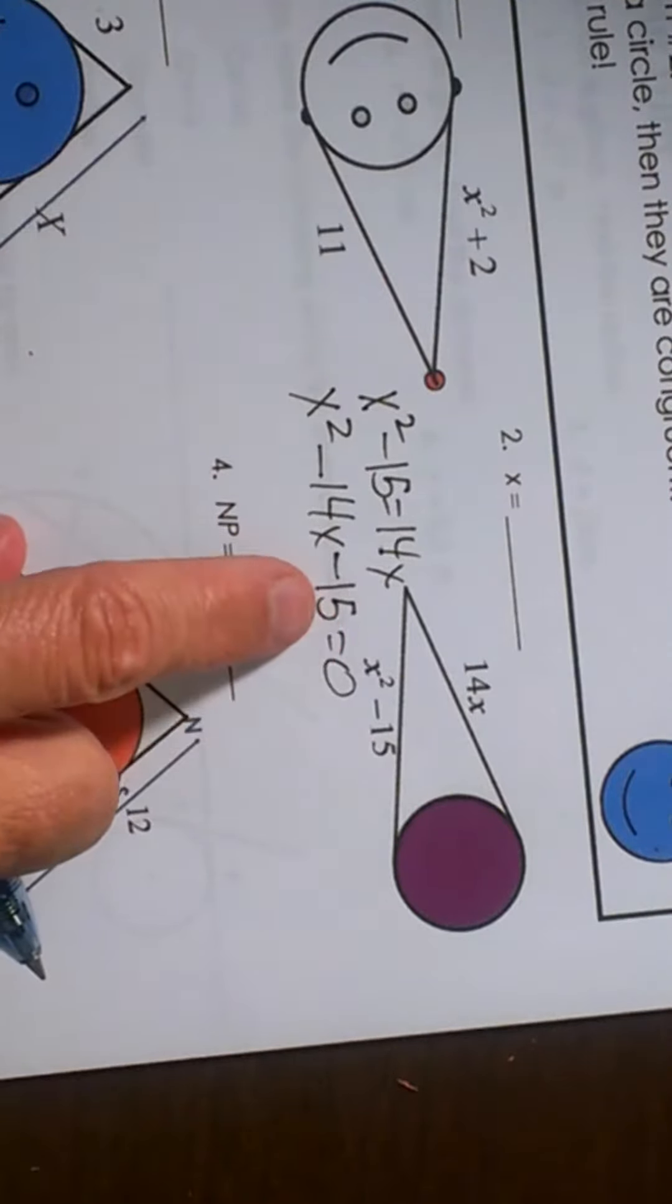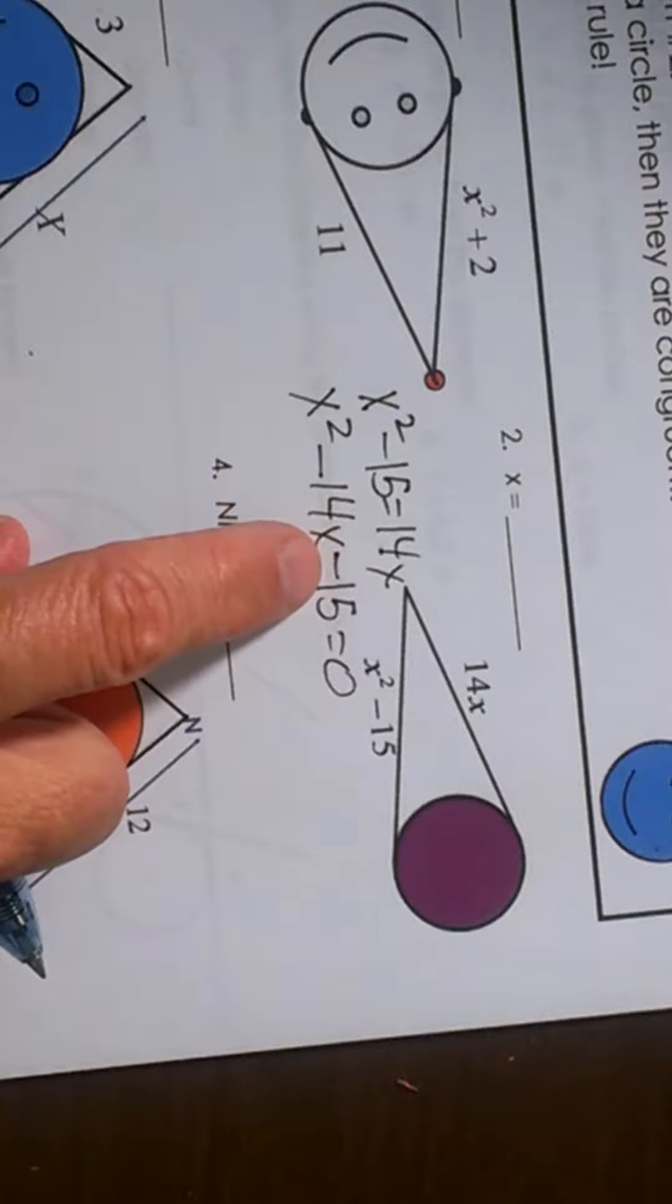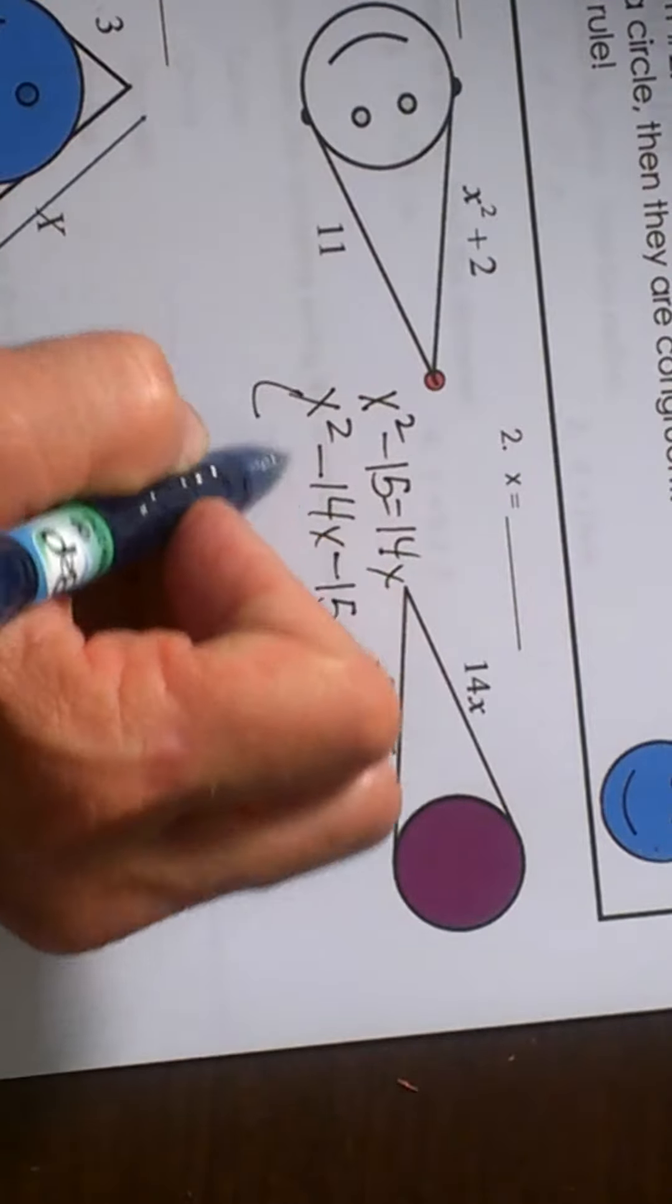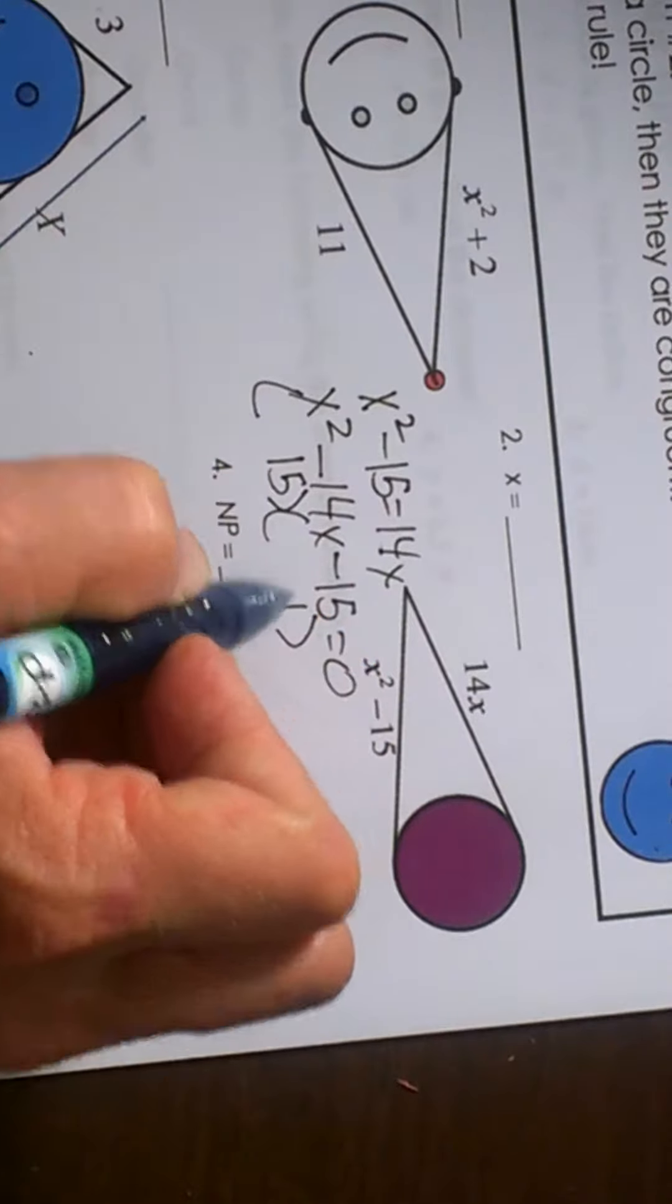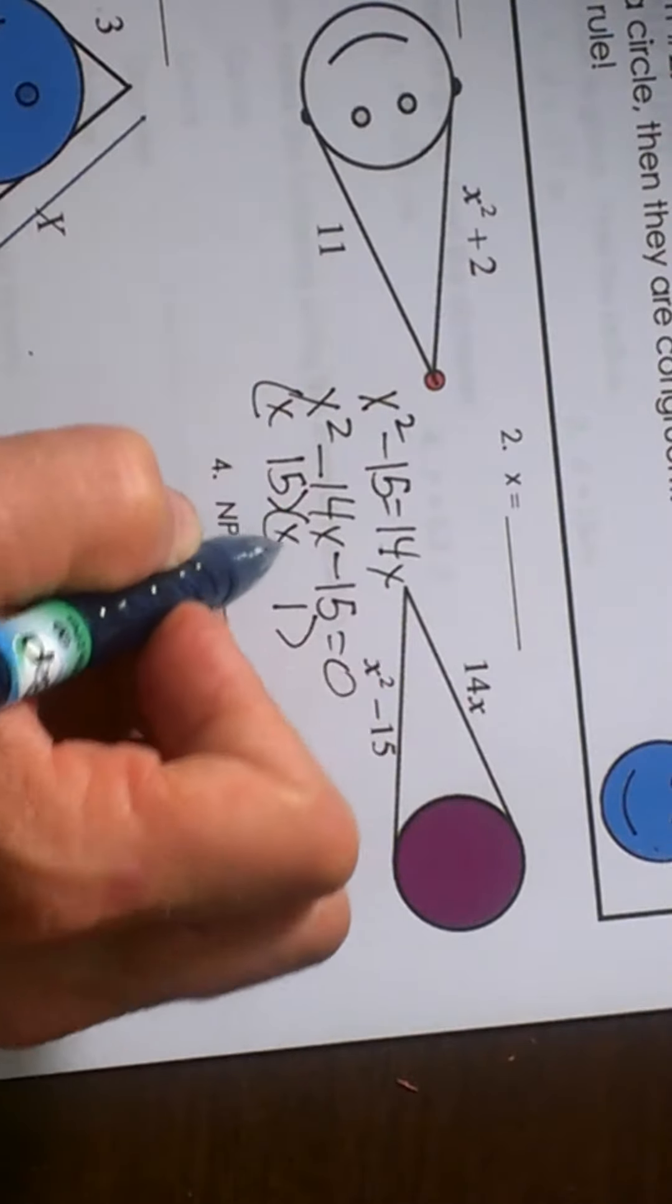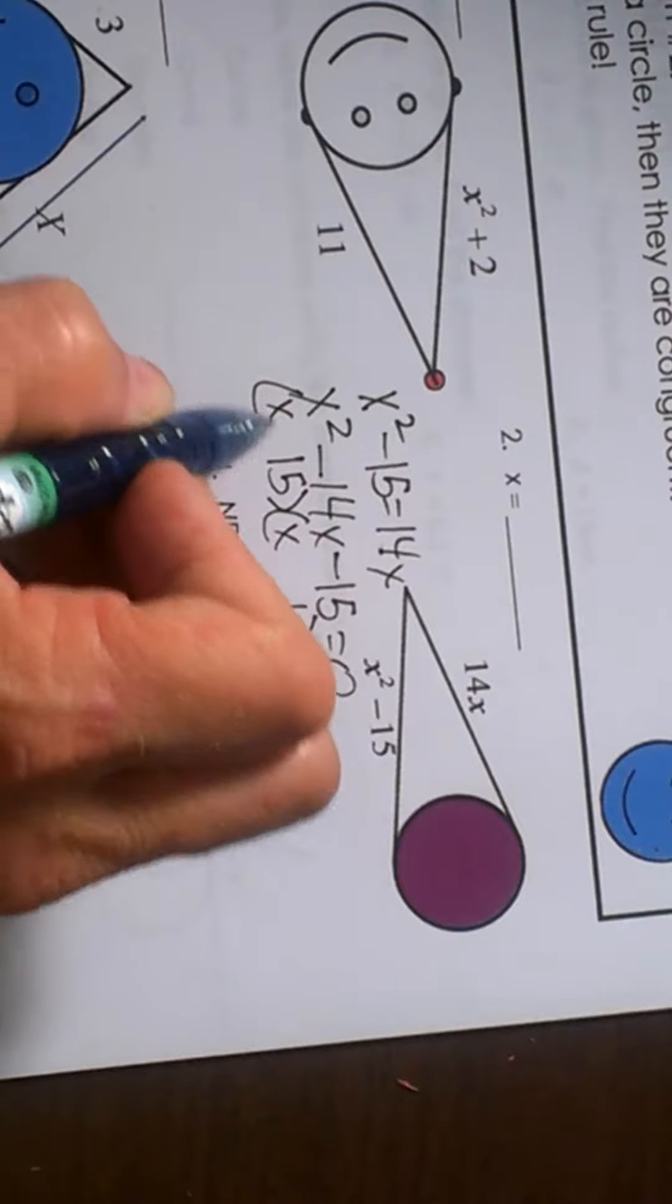Now I can try to factor it. So what multiplies to 15 that has a difference of 14? And we know that those have to be 15 times 1 and we have to factor it into the two binomials.